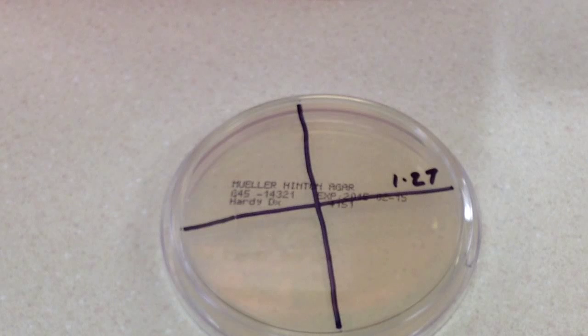making a lawn for Optichin, Novobiocin, and Bacitracin because there we're looking for sensitivity or resistance. Whereas here we're looking for growth. So we don't have to worry so much about making a light lawn.